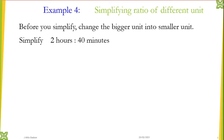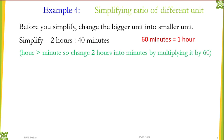Let's look at another version of simplifying ratios with different units. This time we have 2 hours to 40 minutes. In this case you check hours and minutes — which one is bigger? Hours. So we need to change hours into minutes. Your conversion: 60 minutes equals one hour. To simplify ratios in different units you must first learn your conversion. So we're going to change 2 hours into minutes by multiplying 2 hours by 60.